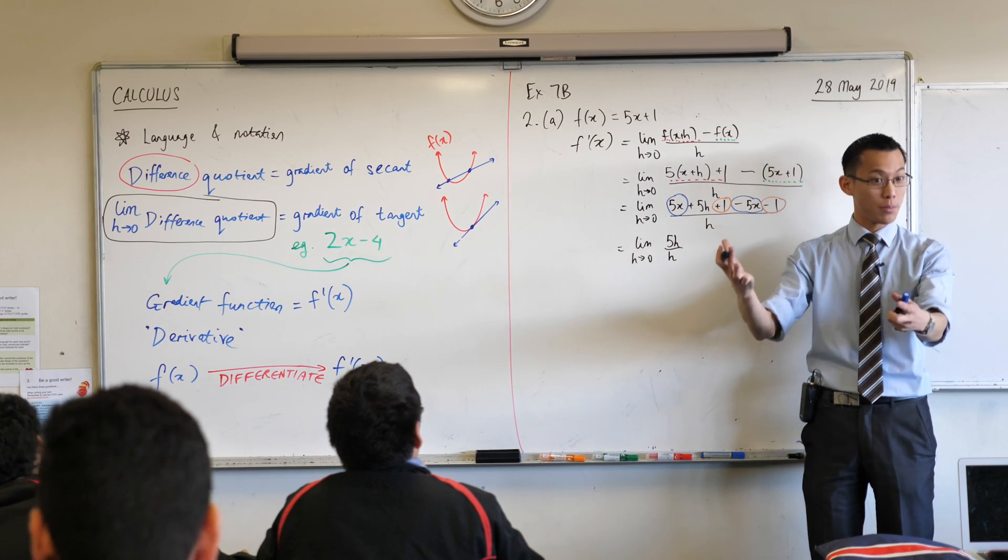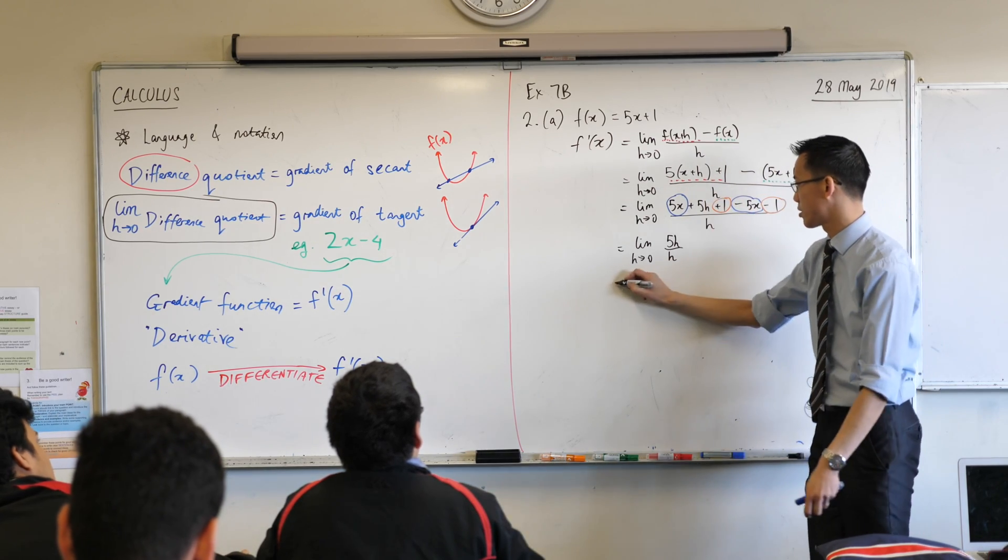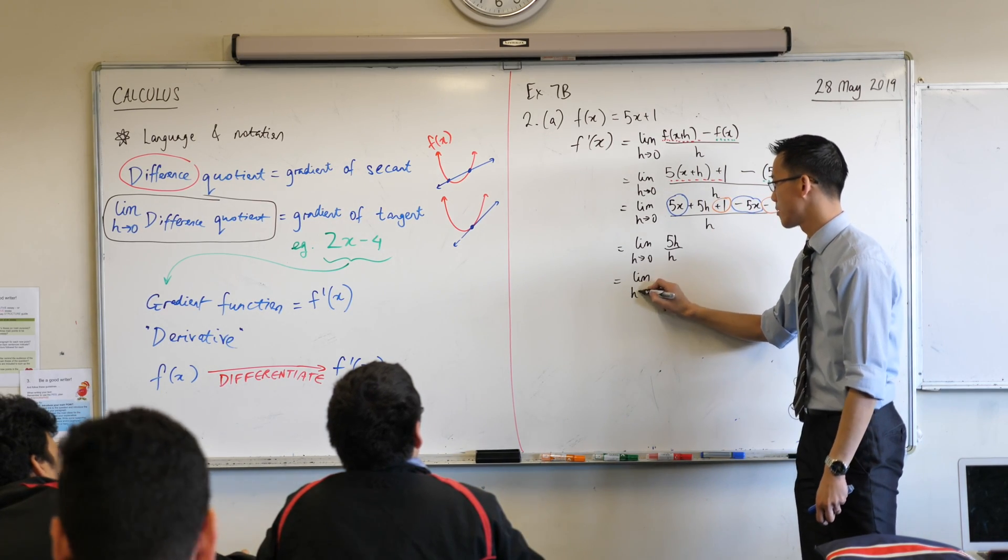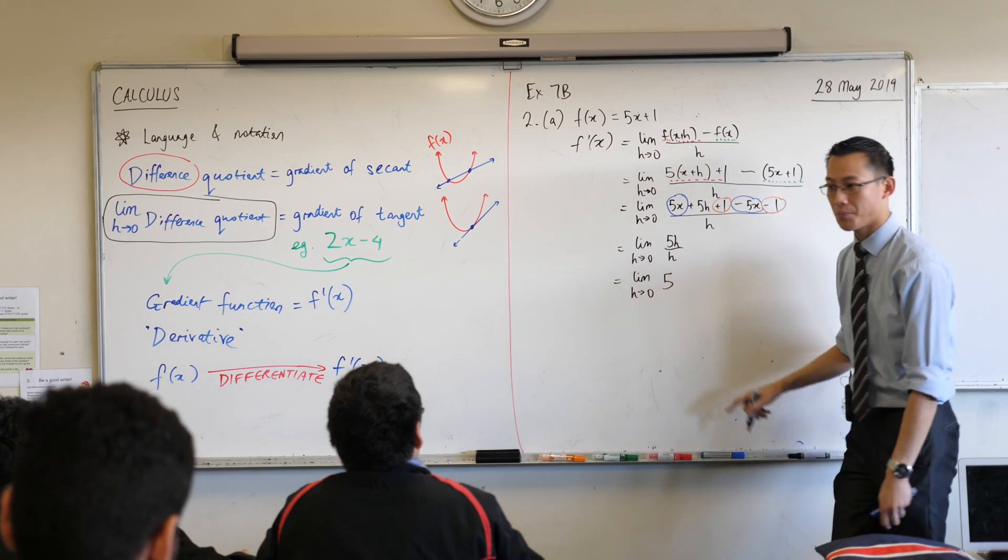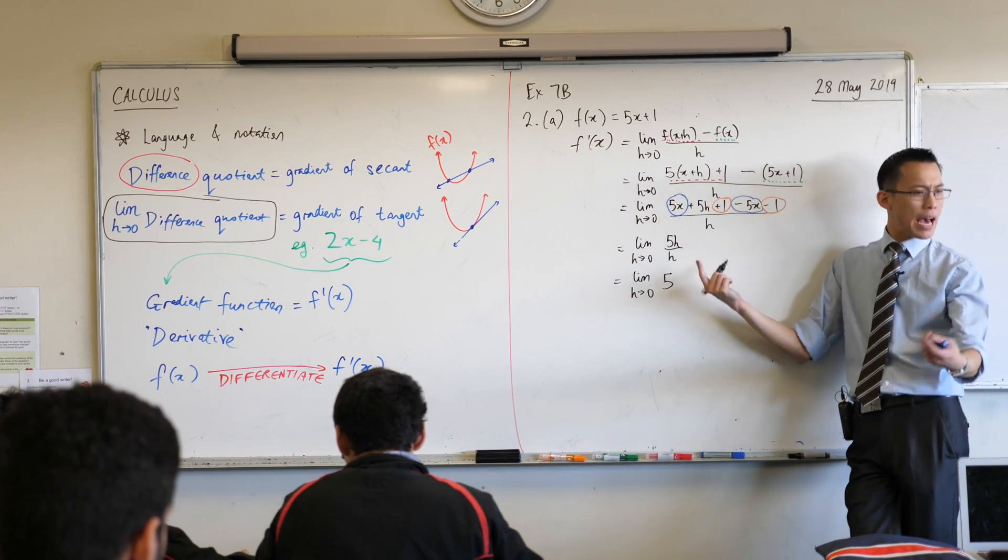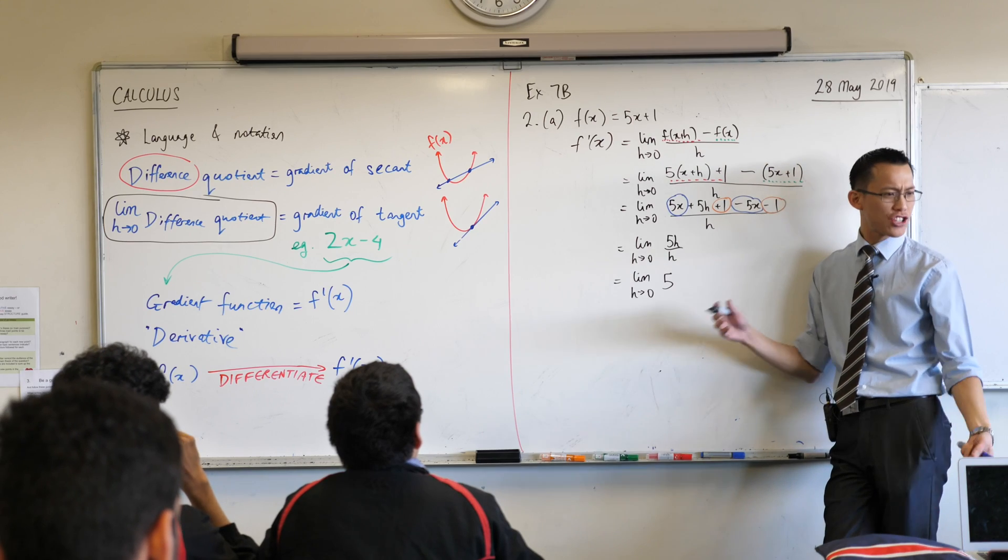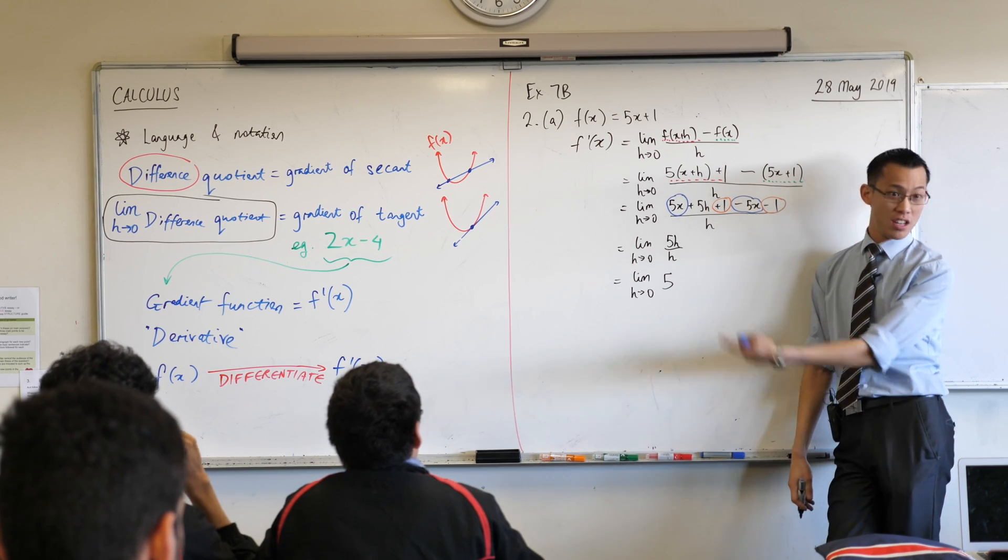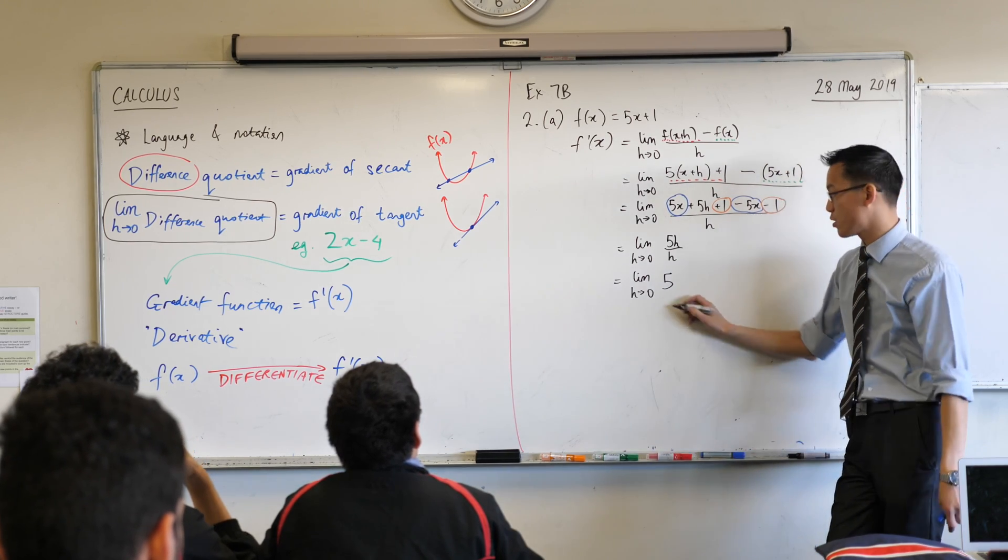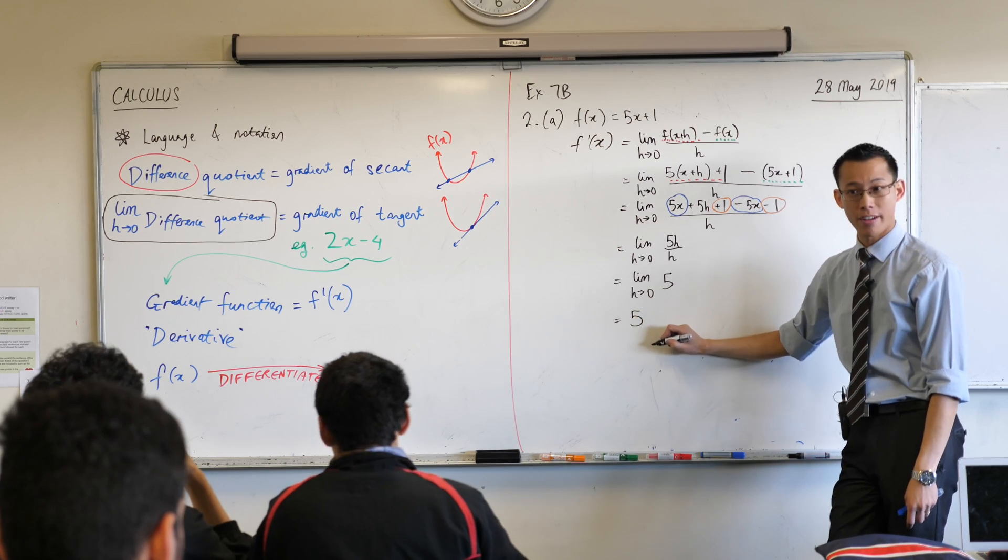So you're like, oh, cool. This is the thing I saw before, right? I can get rid of the h's. So I say this. Now, at this point, you're like, oh, what happens when h gets closer and closer to 0? What happens to 5 as h gets smaller and smaller? And the answer is nothing happens to 5. 5 just stays 5. Okay?